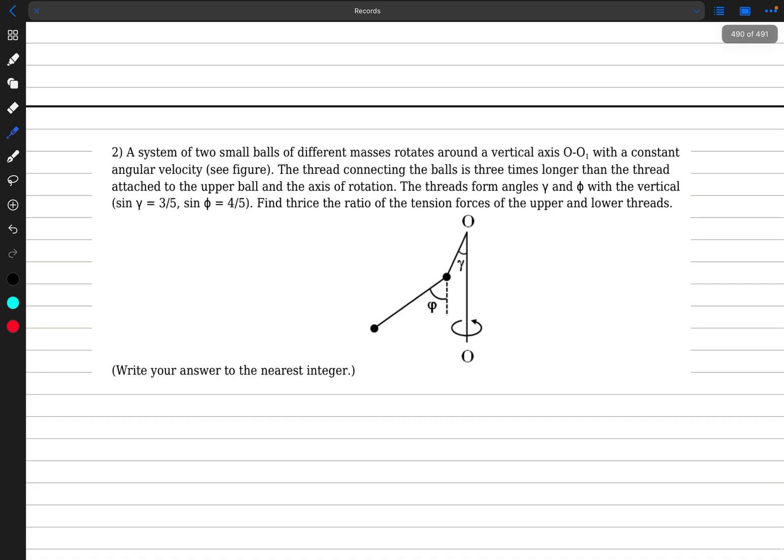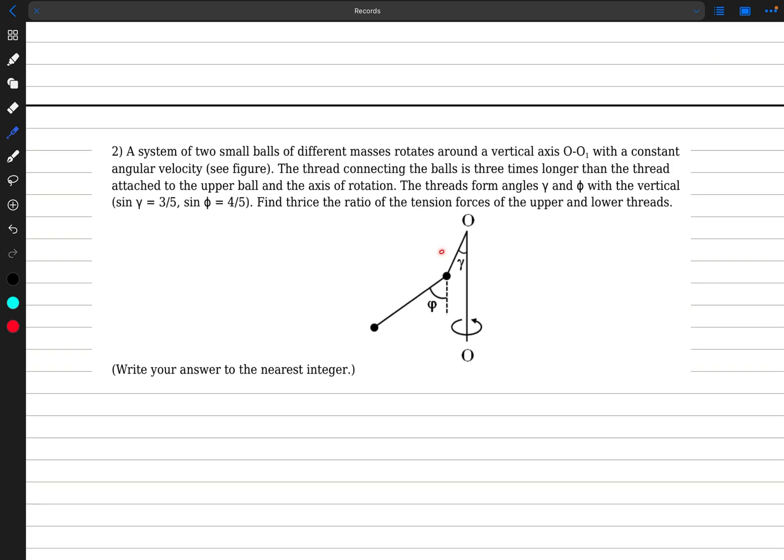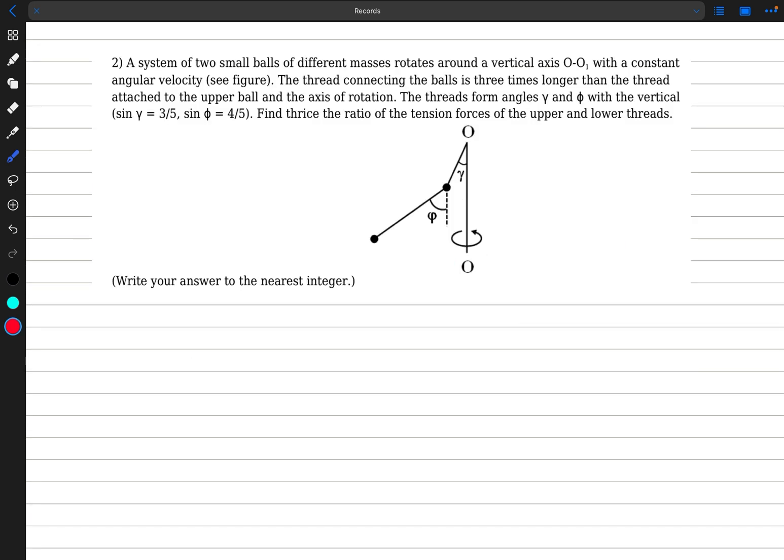So we have this problem over here in which we have two small balls of different masses and it rotates around a vertical axis with a constant angular velocity omega. The thread connecting the balls is three times longer than the thread attached to the upper ball. So basically if this length is L, this length is 3L. The threads form an angle gamma and phi with the vertical axis. Find thrice the ratio of the tension forces of the upper and lower threads. So we have to find three times T1 and tension in the lower thread T2, so this is what we have to find.